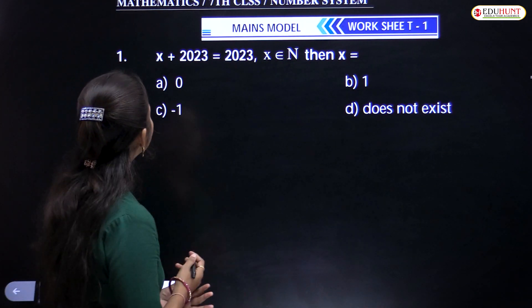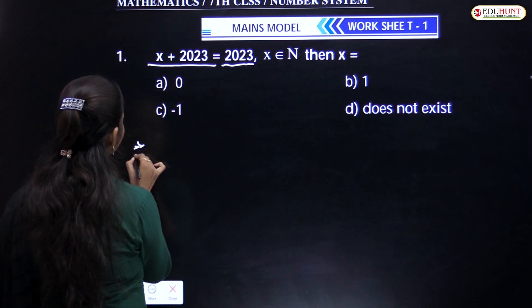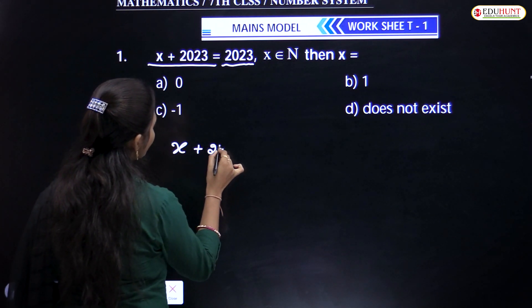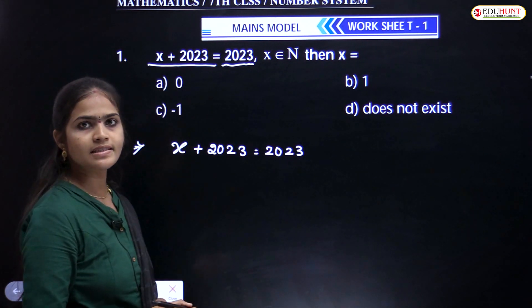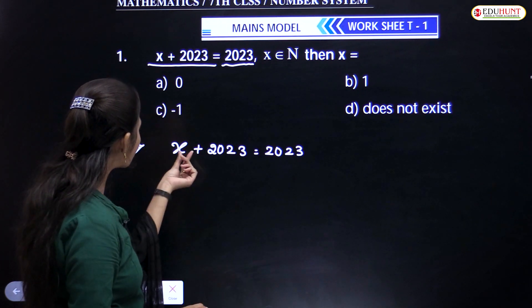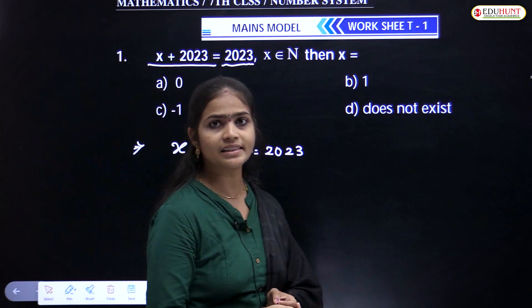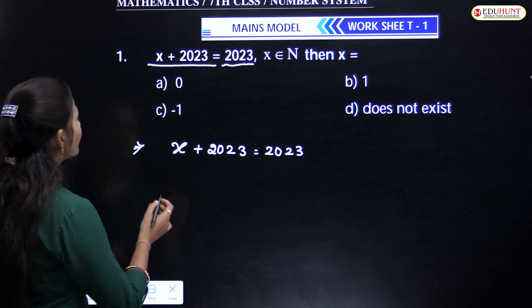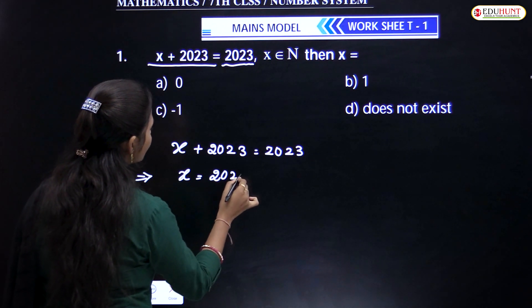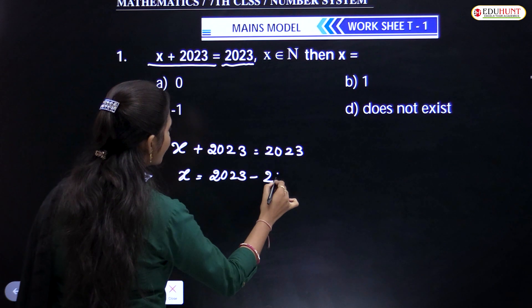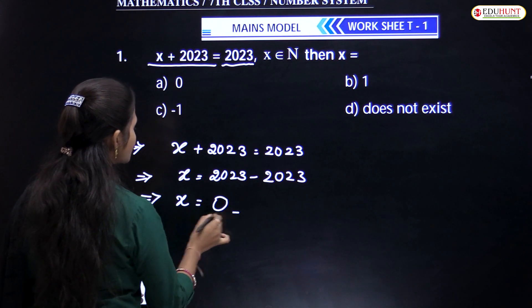So the first one: x plus 2023 is equal to 2023. What is the given condition? x plus 2023 is equal to 2023. What is the value of x? Here you can observe in two directions. If you add 0 to that given number, then only you will get the number itself. So we can write this as x equals 2023 minus 2023, which equals 0.